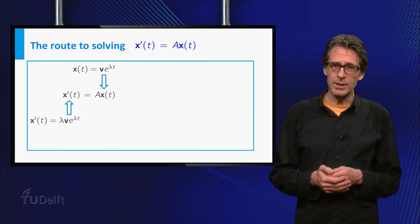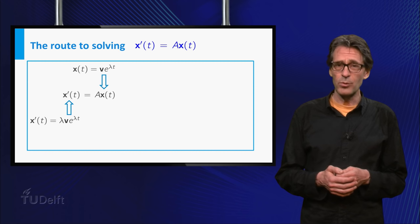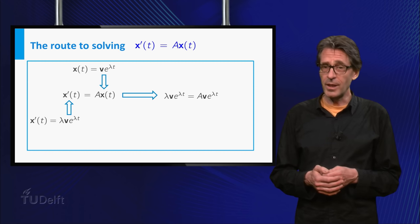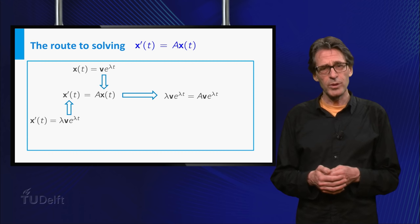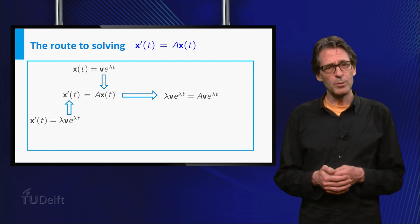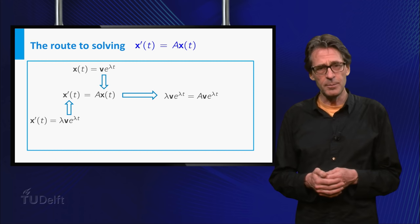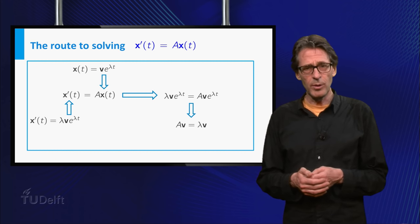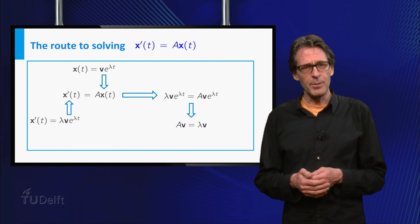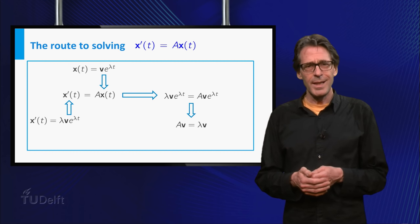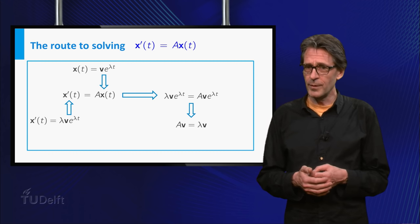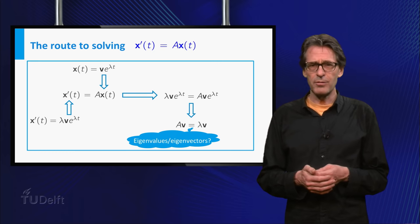So if we plug x(t) equals v times e to the power λt into the system in matrix form, we find that v and λ have to satisfy an equation of which both sides can be divided by e to the power λt. This is allowed since the exponential function is never zero. We find that λ and v have to satisfy A times v equals λ times v. Hey, where did we see this before? That's about eigenvalues and eigenvectors, isn't it?